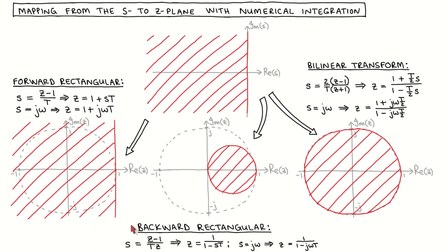When we use the backward rectangular rule, we replace every occurrence of s in the controller transfer function with z minus 1 over Tz. This corresponds to the mapping z equal to 1 over 1 minus j omega T, which can be shown to correspond to a circle with a radius of one half centred at z equal to one half, with the stable region of the s-plane mapped to the interior of the circle. Stable poles in the s-plane will now always be mapped to stable poles in the z-plane, but only a small portion of the stable region of the z-plane will be used.